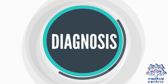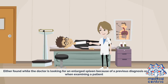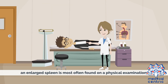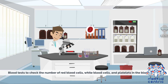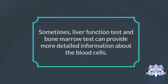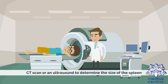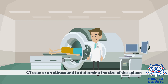Diagnosis and treatment: An enlarged spleen is most often found on a physical examination, either while the doctor is looking for it due to a previous diagnosis or incidentally when examining a patient. The doctor can confirm the diagnosis with blood tests to check the number of red blood cells, white blood cells, and platelets, as well as liver function and bone marrow tests. A CT scan or ultrasound can determine the size of the spleen, and MRI can trace blood flow through it.